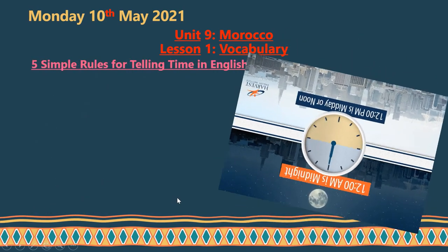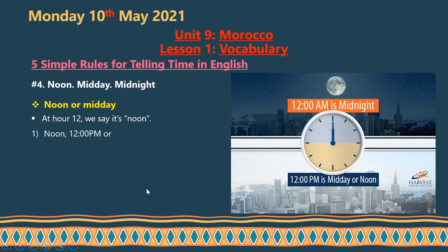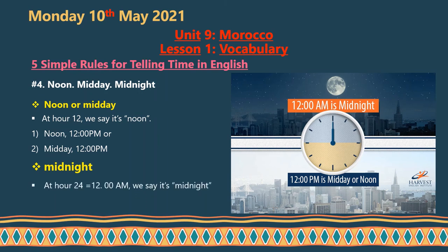Rule number four covers 'noon,' 'midday,' and 'midnight.' Noon and midday mean the same thing — 12:00 PM. You can say either 'it's noon' or 'it's midday.' Midnight refers to 12:00 AM — the hour 24, or the start of the new day. So midnight is 12:00 AM.